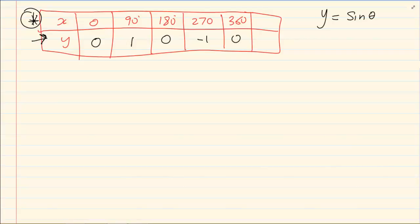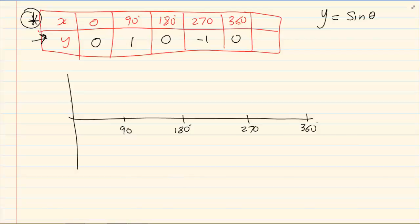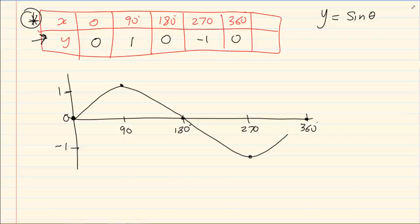This is called your mother graph - it means this is where we start working from. If I was drawing, I'd have 90, 180, 270, 360. If we start plotting: 0 and 0, then 90 and 1, 180 and 0, 270 and minus 1, 360 and 0. To draw the mother graph is quite easy. What I need you to do before you continue any work is make sure that you understand and know this table, because everything we do after this is going to link to this table.